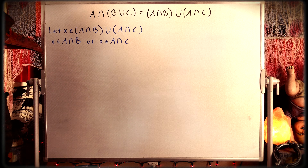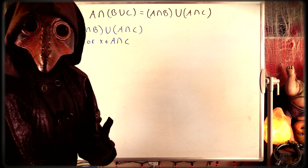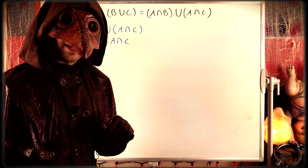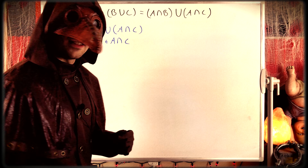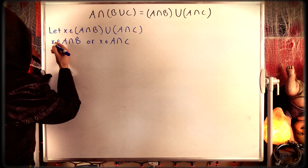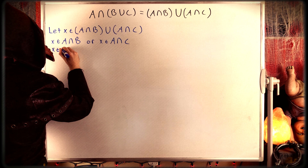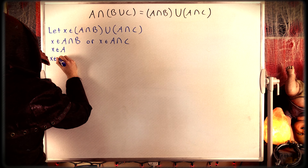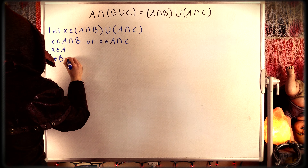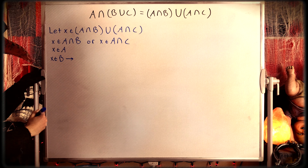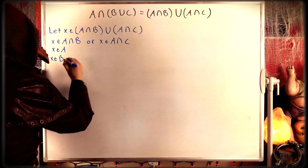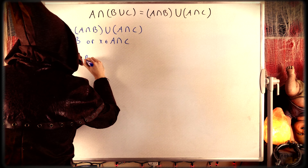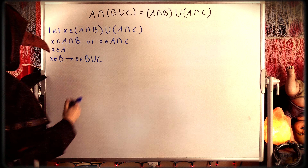Let's say x is an element of A intersect B. That means x is an element of A, and it also means x is an element of B. But if x is an element of B, then by definition of set union, x is an element of B union C.